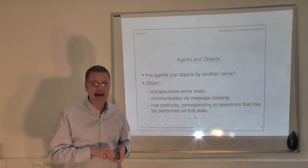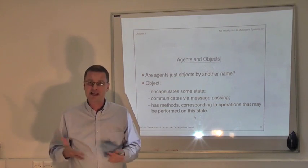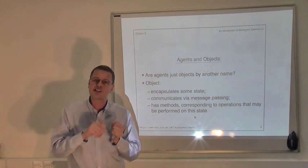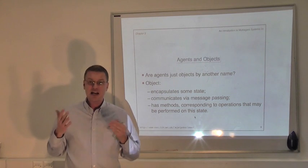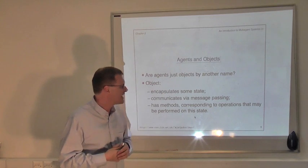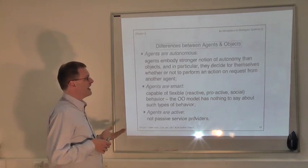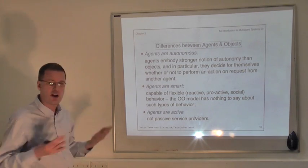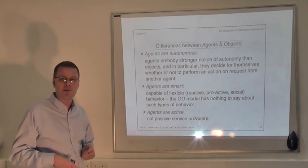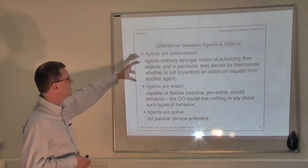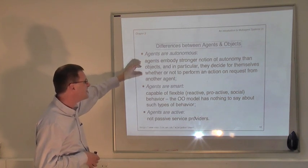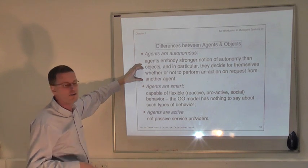Going back to the idea of objects as encapsulating some state, similarly we have the same idea in the agent world — I have some private state, some beliefs about how the world is, and it's not the case that you can directly manipulate that state. So we think about agents as informing one another of things, not directly manipulating the state. While objects have some autonomy over their state, they don't really have autonomy over their behaviour. They provide public services that can be invoked by anybody who has a handle on that object. Whereas agents embody a stronger notion of autonomy — an agent can decide for itself whether or not to perform an action on the request of another.